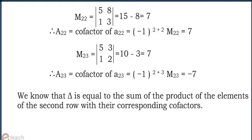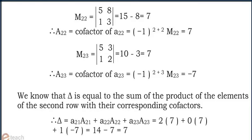We know that determinant is equal to the sum of the product of the elements of the second row with their corresponding cofactors. That is, delta equals a21 into cofactor of a21 plus a22 into cofactor of a22 plus a23 into cofactor of a23.